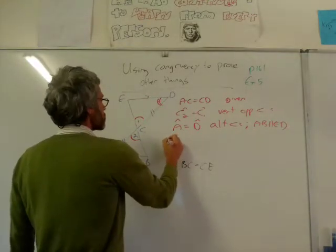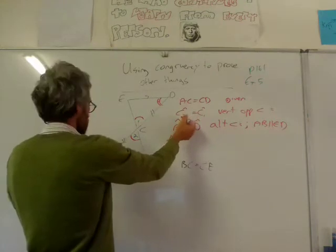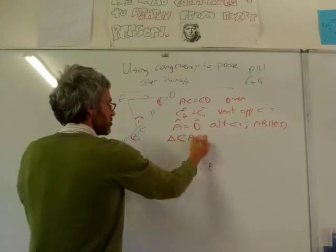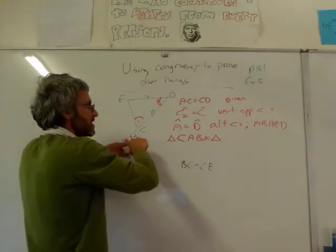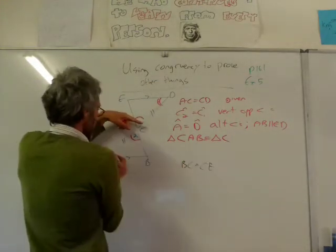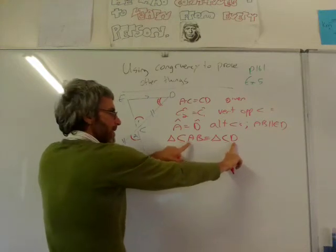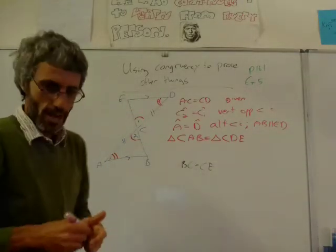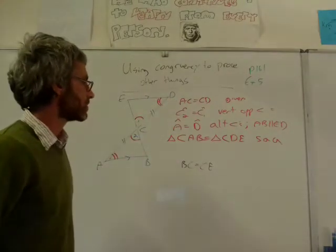I can say triangle CAB - and this is why I wrote all the stuff from the bottom triangle on the left. I start with C because those angles are equal, then A, then B. What matters is: if I start with angle C on the left side, I have to start with angle C on the triangle above, because C2 equals C1. Then angle A equals angle D, so from C I move to D. The last vertex is E. The reason is SAA - I've got one side and two angles.